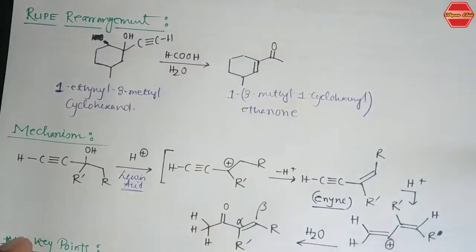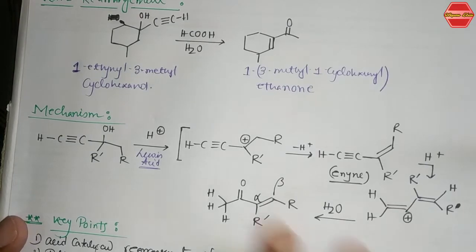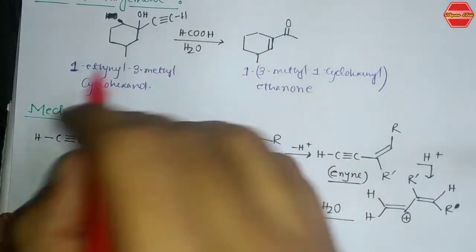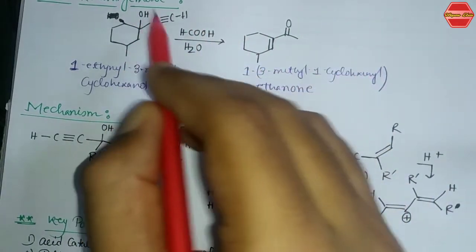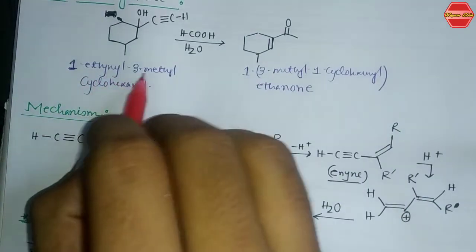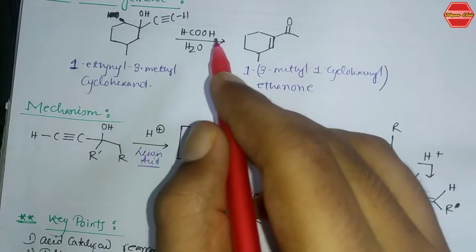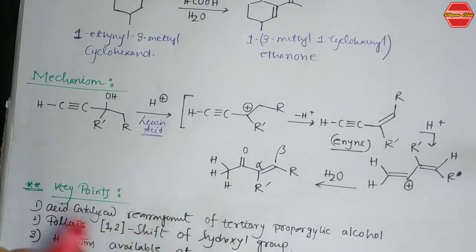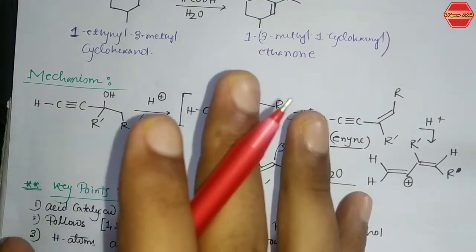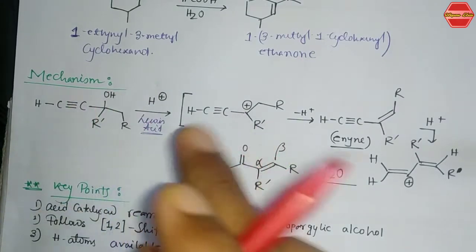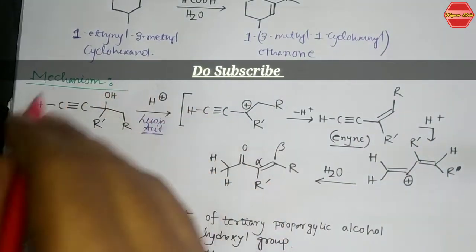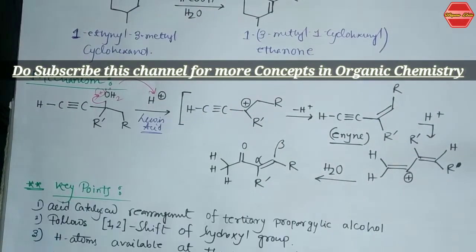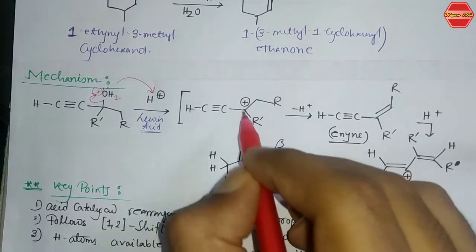Now let's see the Rupe rearrangement — it is the second part of this video. The Rupe rearrangement is similar to the Meyer-Schuster rearrangement but the mechanism is slightly different. Similarly, a propargylic alcohol is used — for example, 1,1-diethyl-2-propyn-1-ol (a tertiary propargylic alcohol with cyclohexanol). With a strong acid like formic acid, you get an enol/ketone product. In the presence of H⁺, the lone pair of oxygen takes the proton, forming OH₂⁺, which simultaneously leaves, generating a carbocation on that carbon.